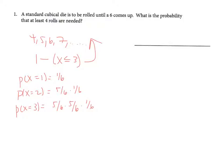So I'm going to take one and subtract these three cases. And this will be the probability that I need at least four rolls. This simplifies to 125 over 216.